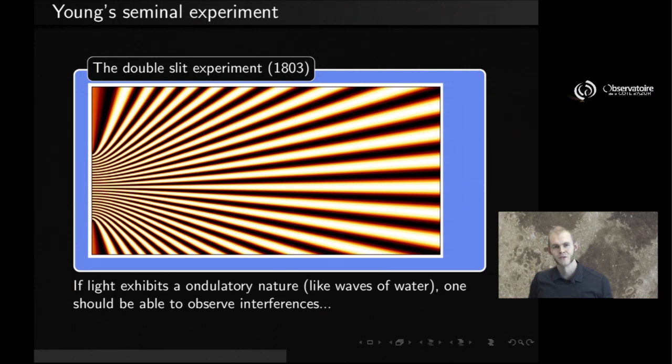With this experiment, Thomas Young was able to show that light did indeed exhibit an ondulatory nature, and he managed to do this by producing interferences between two light sources. Let's see how he did it.